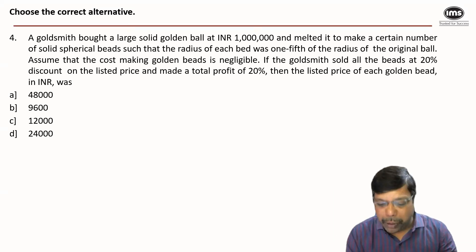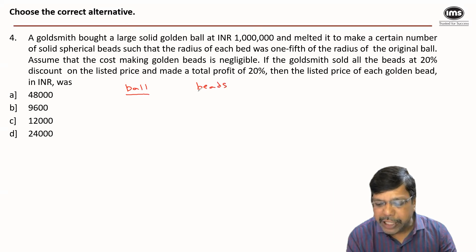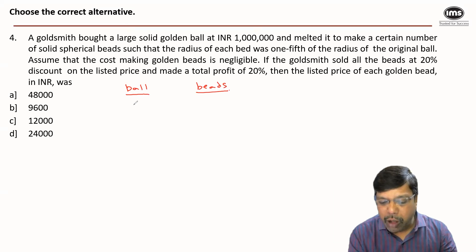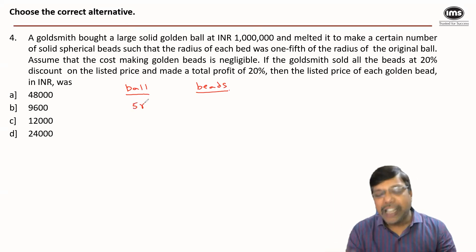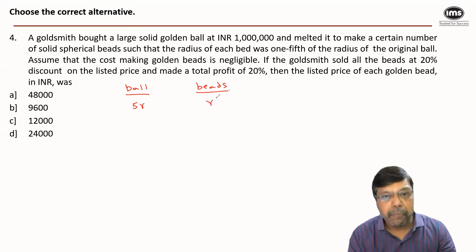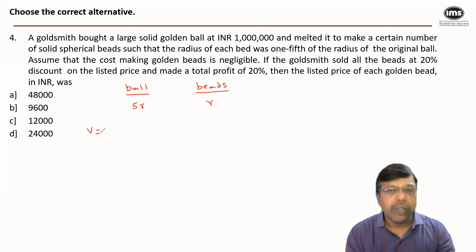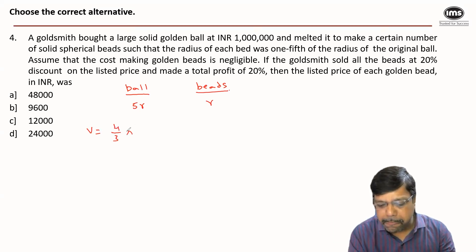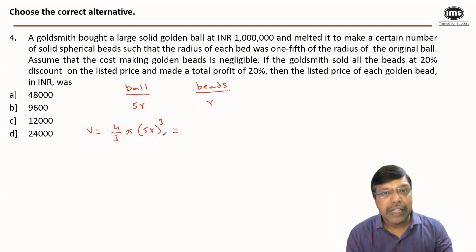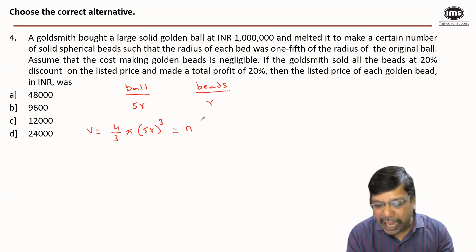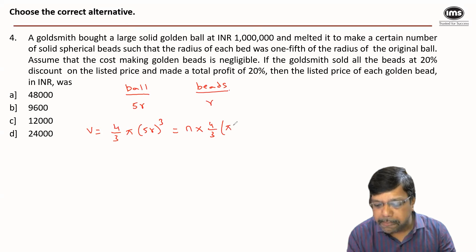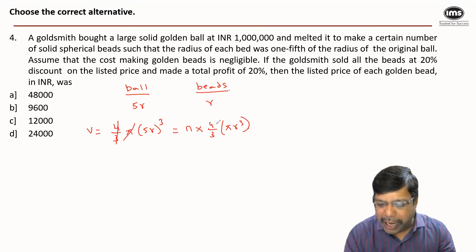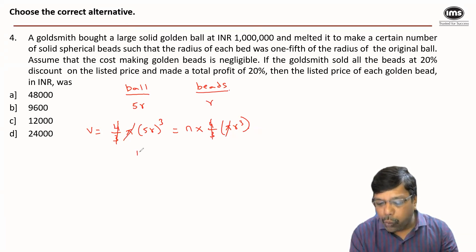Let's use that volume property. For the big ball and the smaller spherical shaped beads, let the radius of the ball be 5r so that the radius of each spherical bead is r. The volume of the ball — volume of a sphere is (4/3)πr³ — must equal n times the volume of each bead, which is again (4/3)πr³. The (4/3)π cancels out, and we get 125r³ = n × r³.